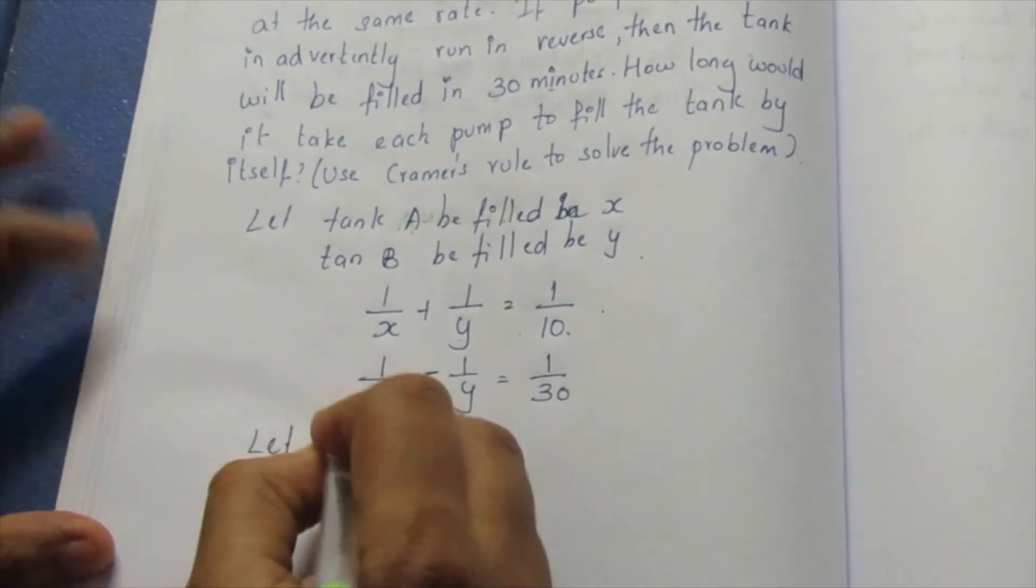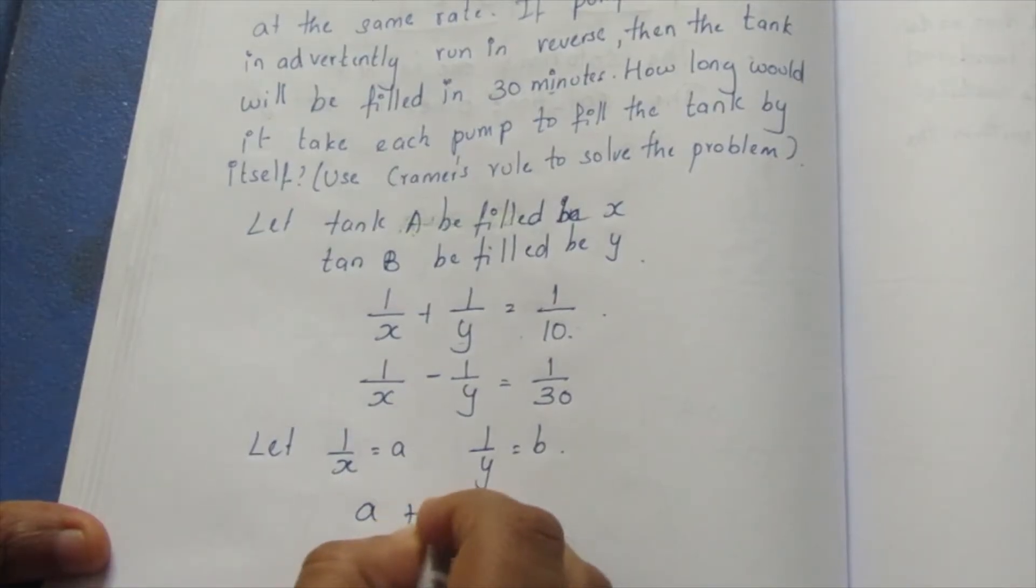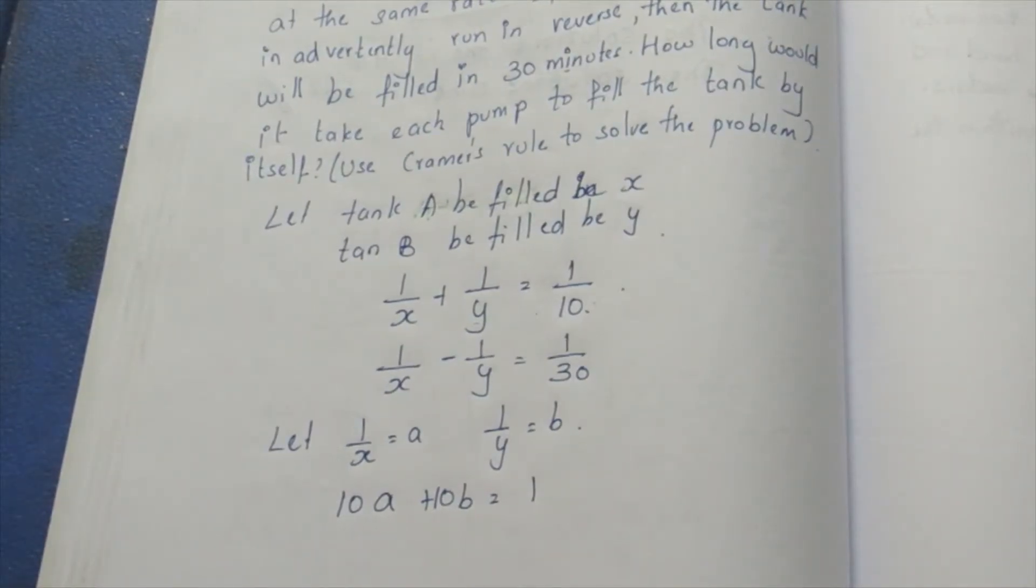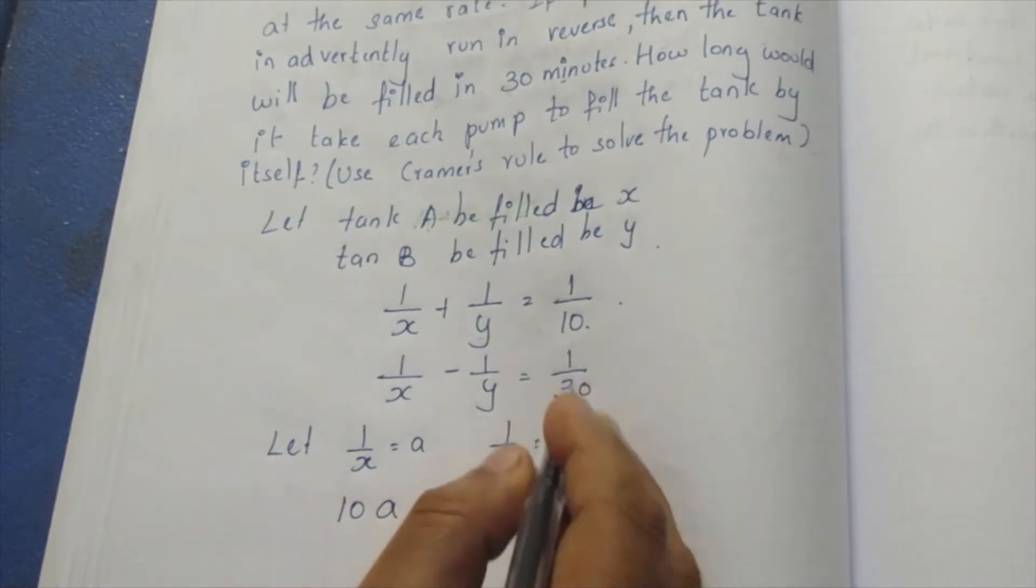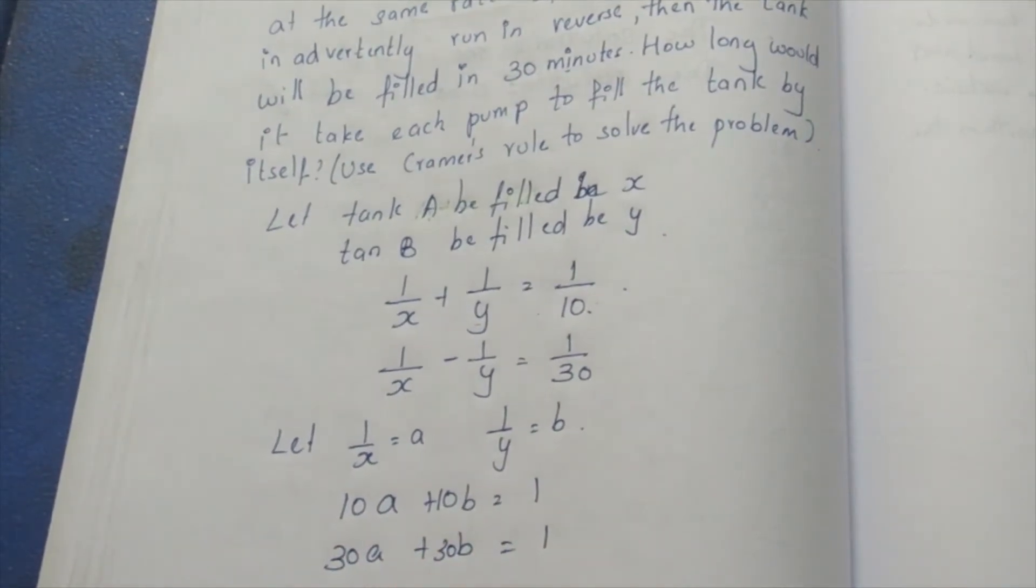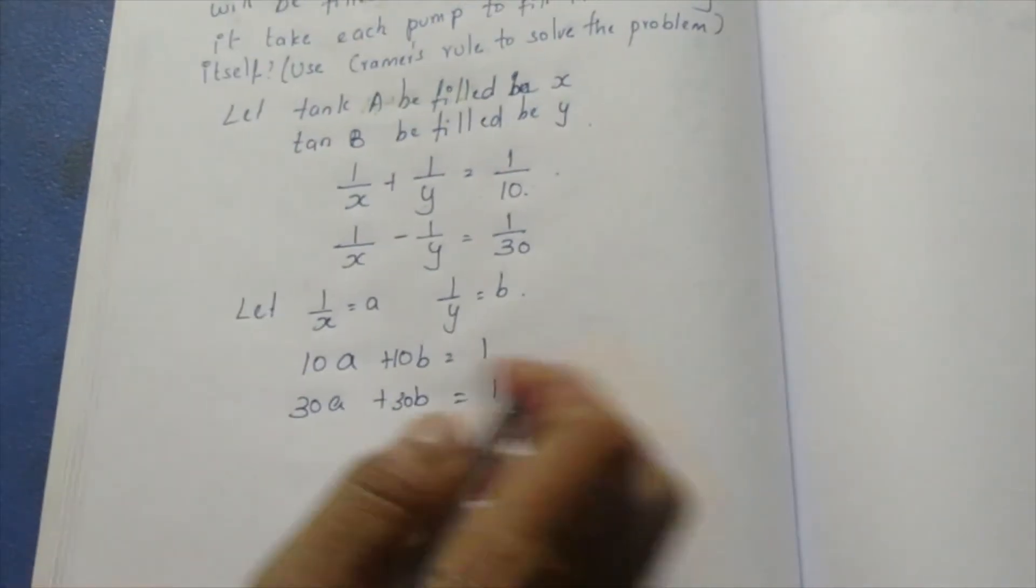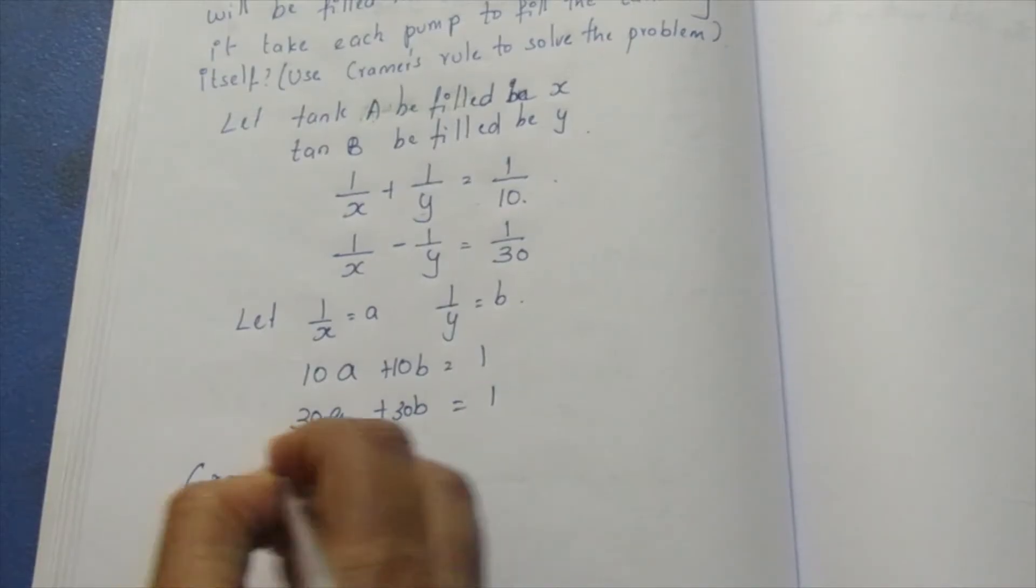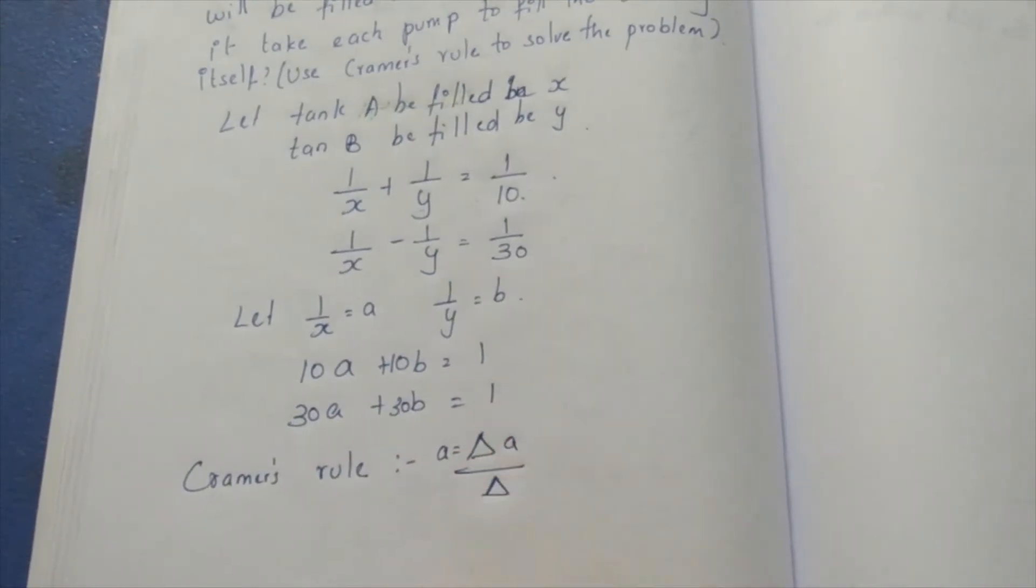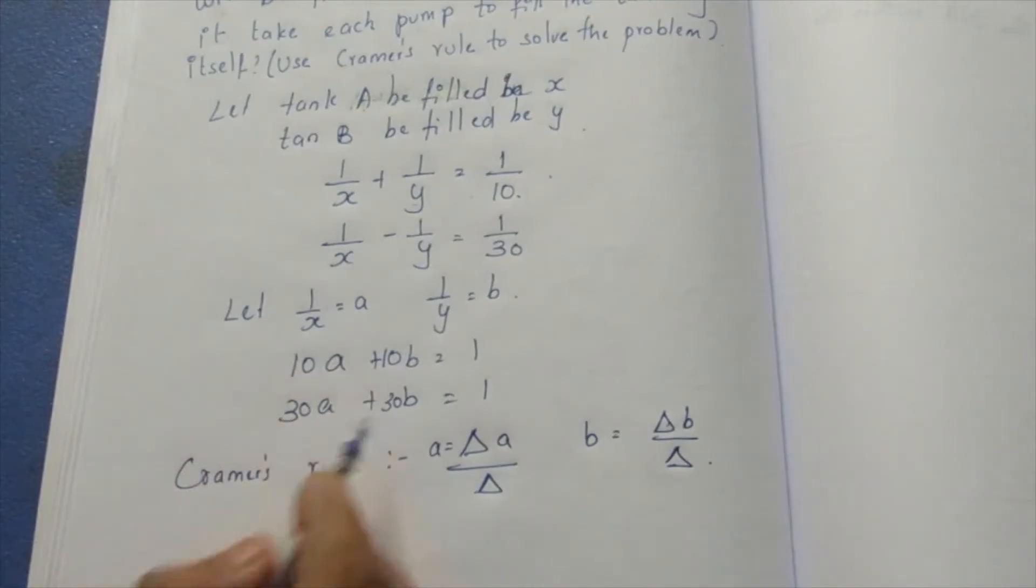Now we will form the equation. Let 1 by x equal to A and 1 by y equal to B. So a plus b equal to one by 10, and a minus b equal to one by 30. A is equal to determinant A by determinant, and B is equal to determinant B by determinant.